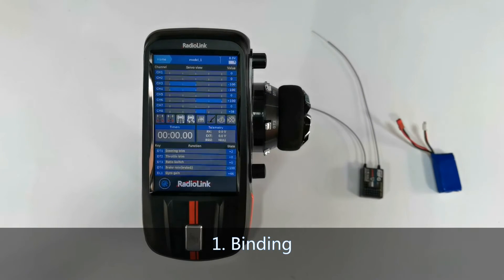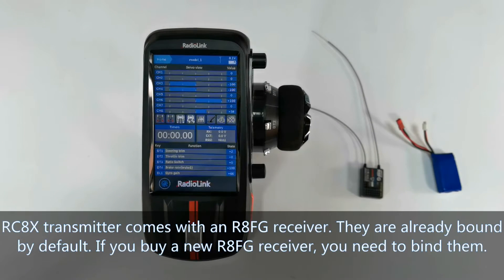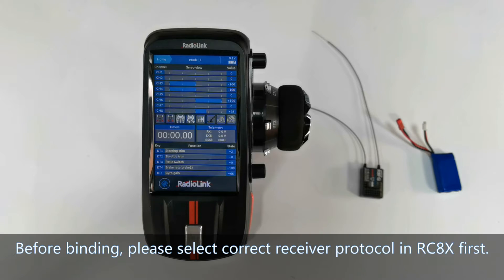First, binding. RadioLink RC8X transmitter comes with an R8FG receiver. They are already bound by default. If you buy another new R8FG receiver, you need to bind them. Before binding, please select the correct receiver protocol in RC8X first.